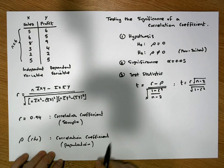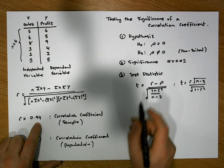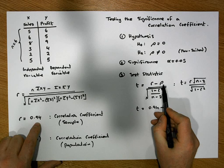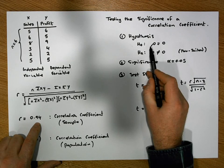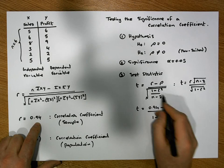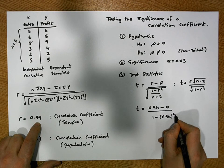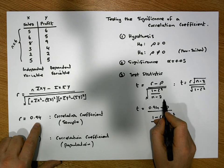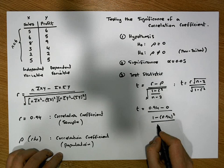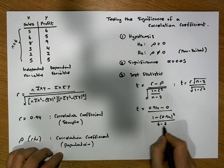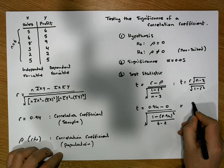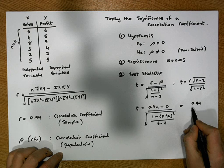We need to calculate our test statistic. We know r is 0.94, so the test statistic is t = 0.94 minus the value of the population correlation coefficient under the null hypothesis, which is zero, divided by the square root of (1 minus r squared) divided by (n minus 2). Here n is 6, so n minus 2 equals 4.